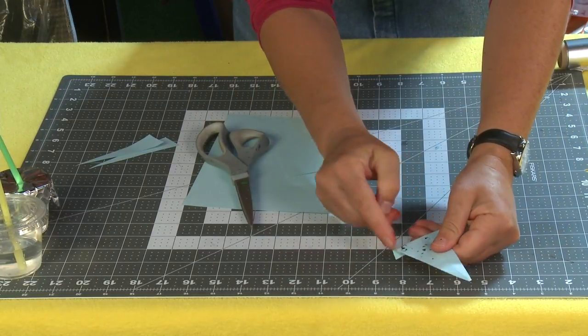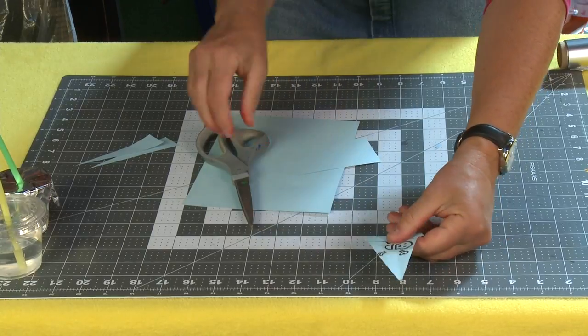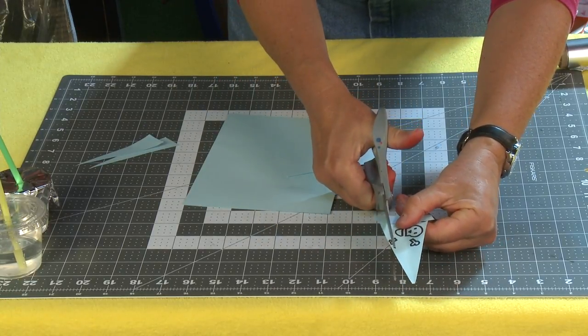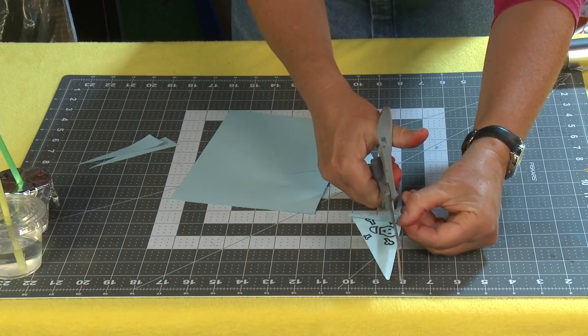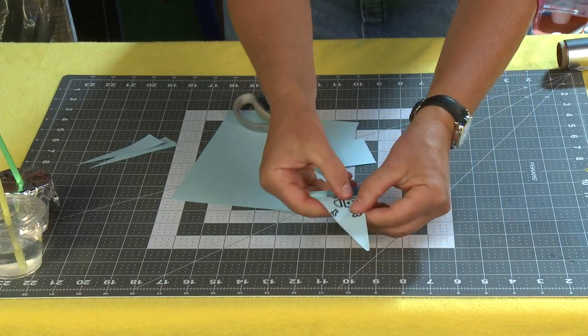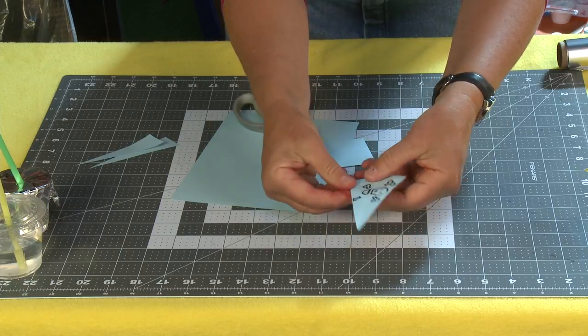Fold that down about half an inch and then just take your scissors and give it a little snip at the bottom about a half inch up and a little snip at the top about a half inch down. And that's going to be for our straw to stick through.